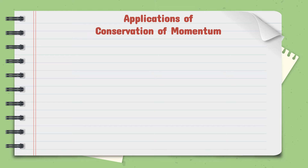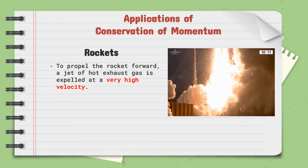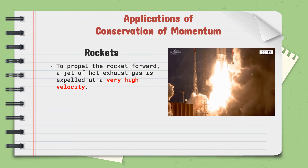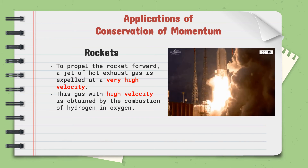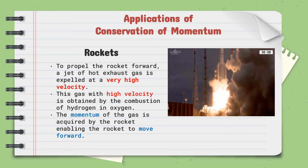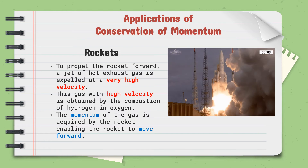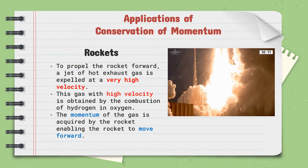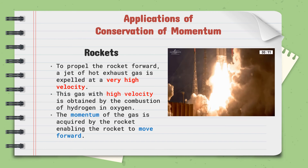For the applications of conservation of momentum, I will show you about rockets. To propel the rocket forward, a jet of hot exhaust gas is expelled at a very high velocity. This gas with high velocity is obtained by the combustion of hydrogen in oxygen. The momentum of the gas is acquired by the rocket, enabling it to move forward. As you can see in the video, as the hot exhaust gas is expelled downward at very high velocity, the momentum of the gas makes the rocket move upward.